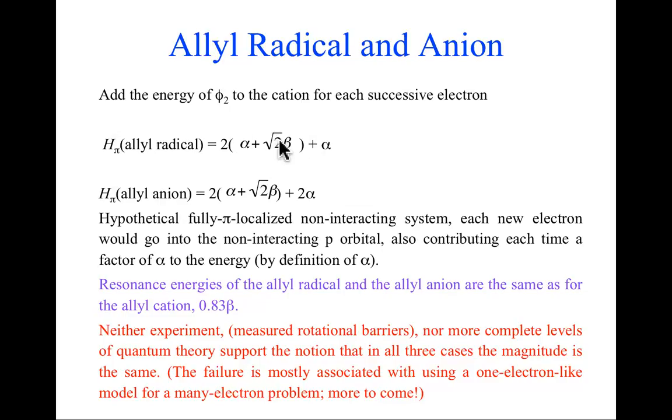So the difference, the resonance energy still comes entirely from this term. And it's still 0.83 beta, right? Two times this quantity minus two times just plain old alpha plus beta. However, if you go and look at the rotational barriers for the allyl radical and the allyl anion, you will discover that those barriers drop successively, actually, until for allyl anion, it's nearly a free rotation, as long as you don't have a coordinating counter ion that's doing something to raise the barrier. So Huckel theory begins to fail, ultimately, in describing the resonance energy in these systems.